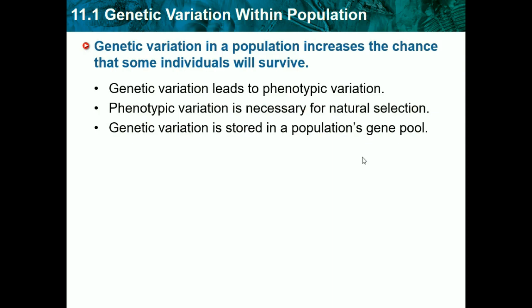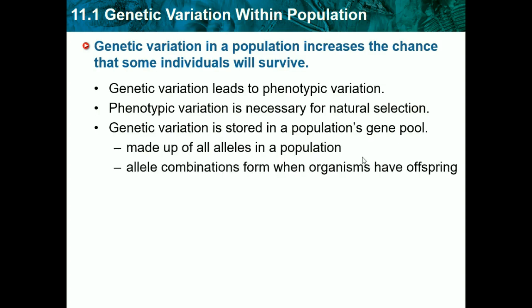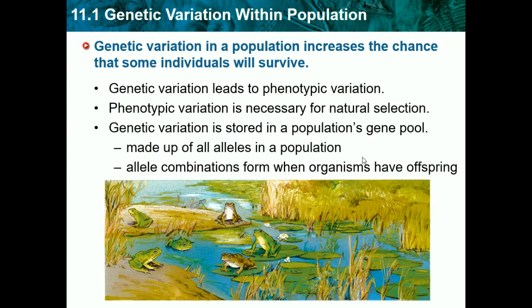We need phenotypic variation for natural selection because natural selection picks out bad qualities and keeps good ones. If everybody is the same, there would be no natural selection. A gene pool is made up of all alleles in a population, including allele combinations from when organisms have offspring.